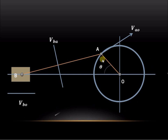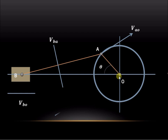Suppose we assume that crank OA is rotating in the clockwise direction. Therefore, the velocity of A with respect to O will be perpendicular to this position of the crank. We have written the vector as velocity of A with respect to O, where O is the fixed point.